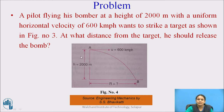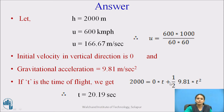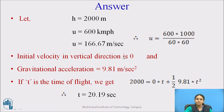Now, in this figure, a pilot is flying a bomber at a height of 200 meters from the ground level with a uniform velocity of 600 kilometers per hour. You have to find the horizontal range — that is, when the bomb is dropped, how much distance it will travel before touching the ground. The height is 200 meters, and the initial velocity is 600 km/h, which converts to 166.67 meters per second. The initial velocity in the vertical direction is 0, and gravitational acceleration is 9.81 meters per second squared.